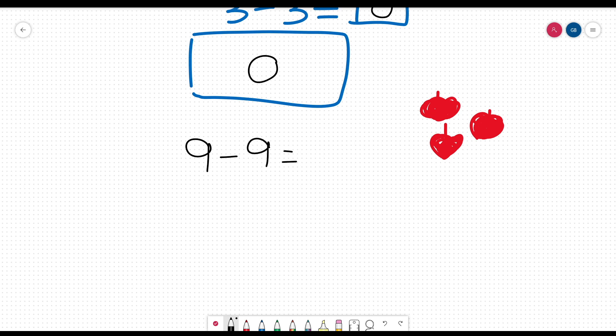So, 9 minus 9 equals 0, 7 minus 7 equals 0, and 1 minus 1 also equals 0.